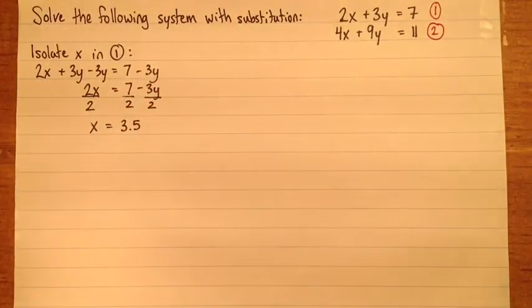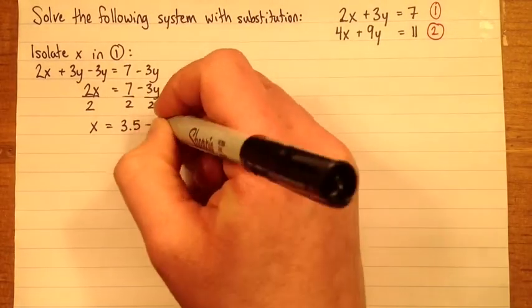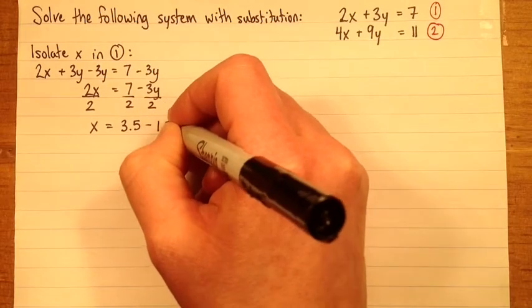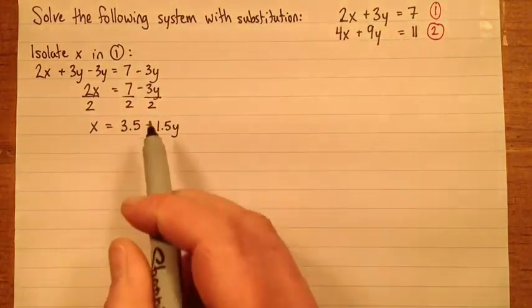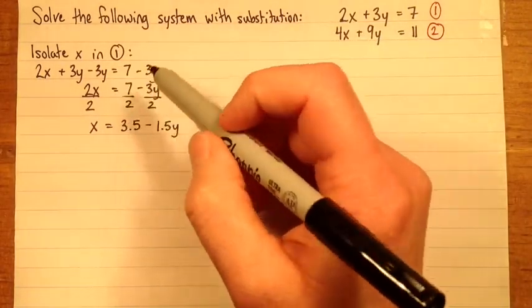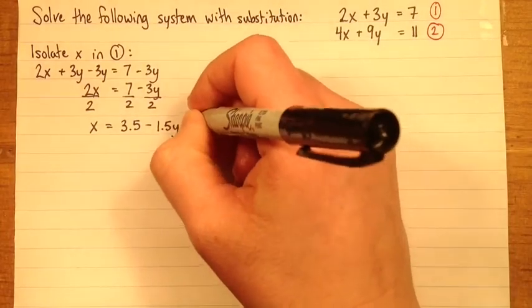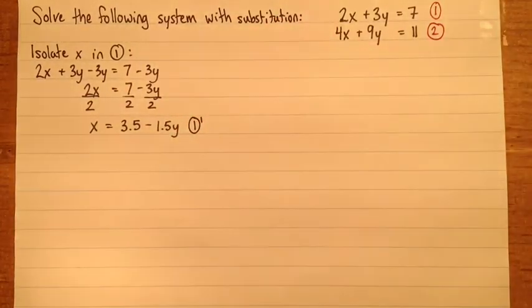So here we have x equals 7 divided by 2 is 3 and a half. I'm going to write 3.5, but you could leave it as 7 over 2 if you want. And minus 3 over 2 is 1.5. And you can leave it as 3 over 2 if you want. So we've got x isolated. Because this is essentially just a rearrangement of equation 1, I'll call that 1 prime.